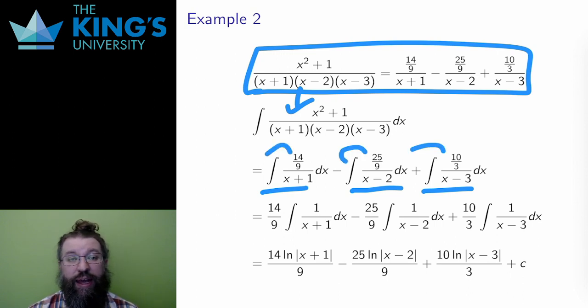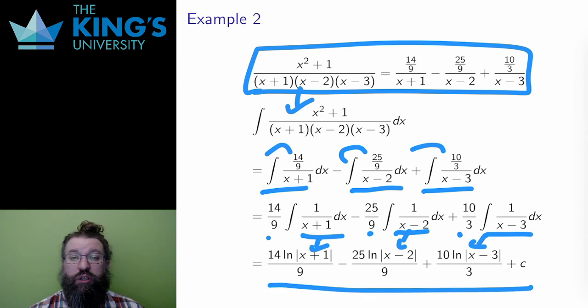I pull out the constants again, and again I just have integrals of 1 over a linear term. These are all logarithm integrals, so I get these three results, plus of course the constant of integration, to produce the complete antiderivative of the original rational function.